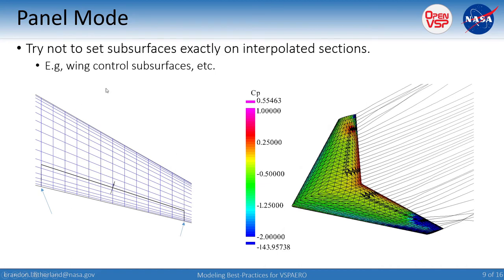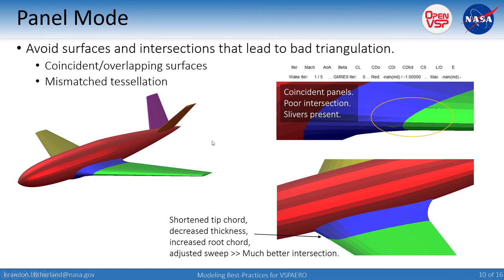Something to watch out for in panel mode is subsurfaces. You can inadvertently put the edges or bounds of a subsurface right on top of interpolated sections, which can create hot spots with very large peak values in your solution. If you see those unreasonably large peaks, that tells you something is wrong. If you adjust the subsurface position slightly, those peak values come down. That's one thing you can use the Viewer for to identify whether something is wrong with the model.